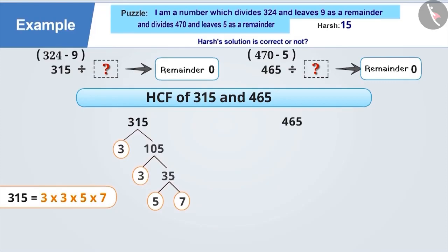Now perform the prime factorization of 465. We get, 465 is equal to 3 into 5 into 31.